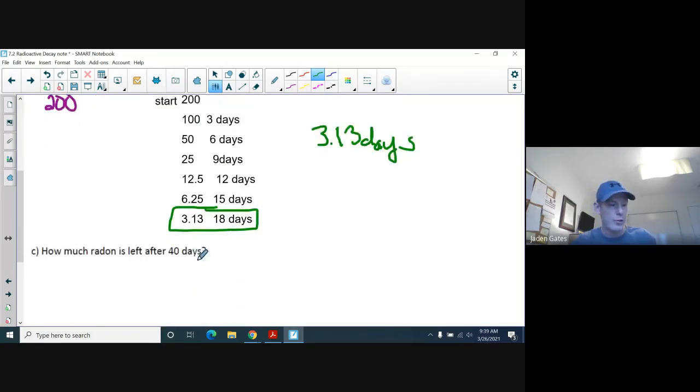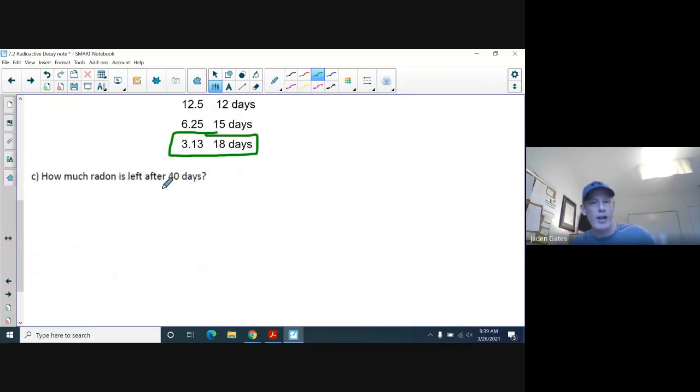Now, here's a different situation. How much radon is left after 40 days. Now, 40 divided by 3 is, let's see here, it's 13.33. Well, this isn't going to work for me anymore. I'm not going to be able to do it this way. So, what I'm going to use is the formula, the other formula we had, where we have N is equal to N-naught times 0.5 to the power of T divided by H.